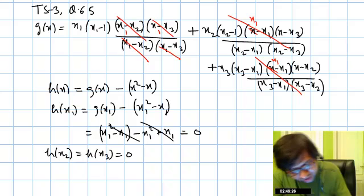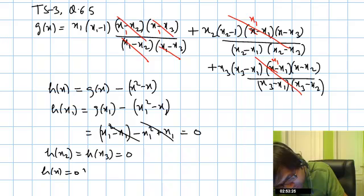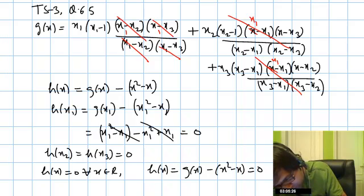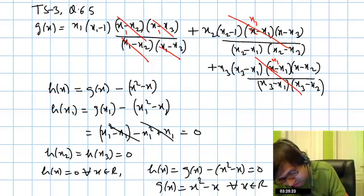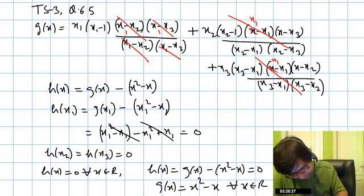So it means h(x) equal to 0 for all x belongs to R. It means h(x) equal to g(x) minus x² minus x equal to 0 for all x belongs to R. This implies g(x) equals to x² minus x for all x belongs to R. So this is what we were supposed to do, simplification of g(x). And if you look at the choices, this is choice B. Answer is B choice.